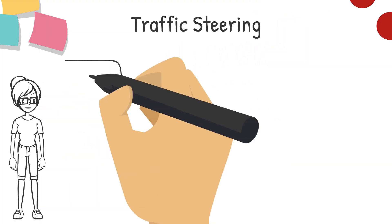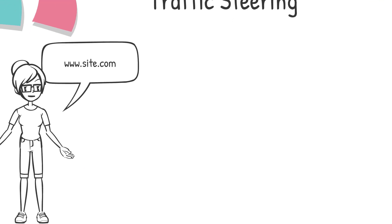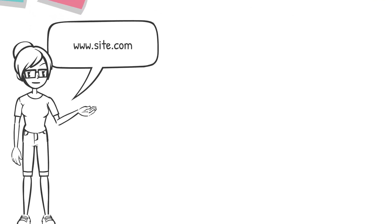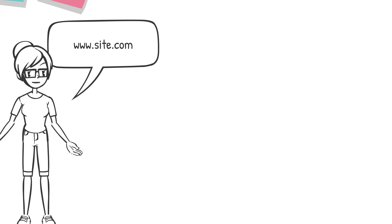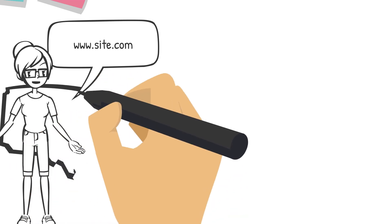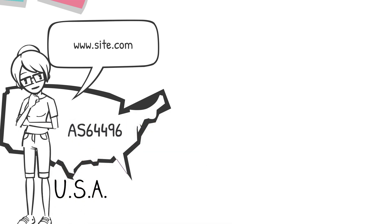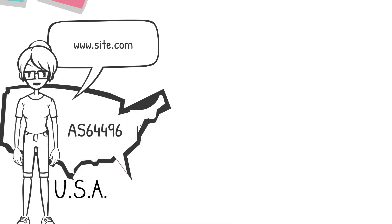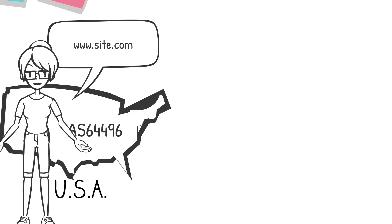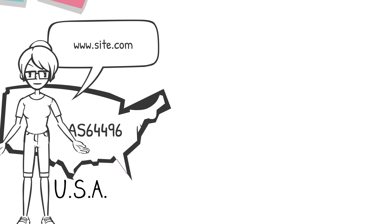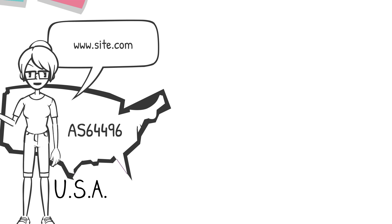Before the record lookup can happen, Kostelix will first look at where the user is coming from. In this case, we're making the request from the United States, which is in the region of North America East, over AS number 64496. AS numbers, or ASNs, are used to identify different networks — in this case, it represents the ISP that we're using to connect to the internet. Traffic steering is going to use this information to decide which CDN provider is fastest for our network.